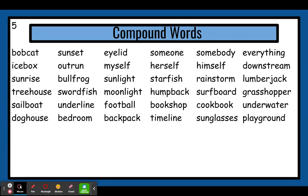Next word, we have the first part: down. And the second part: stream. We put them together, we have downstream. We know what down is. And a stream is like a small river. So if you think about this word, downstream — picture a river going down. Where that is, that's called downstream. Even though this word looks really big, if you can break it up into its two parts — down and stream — you should be able to read the bigger word.